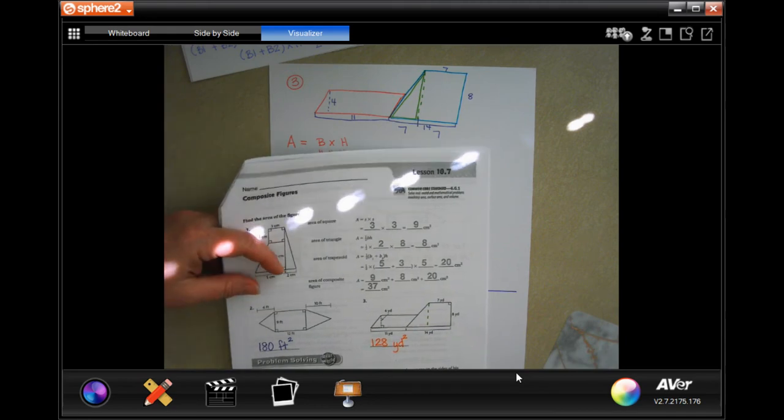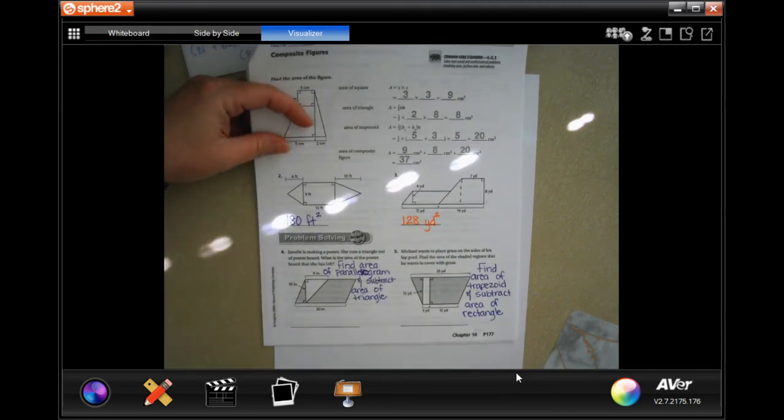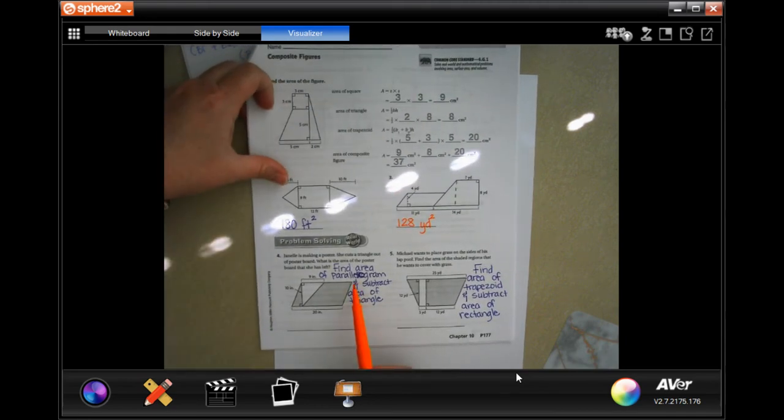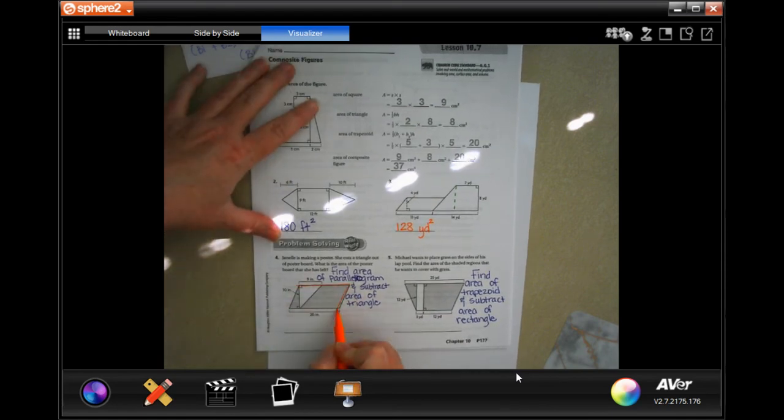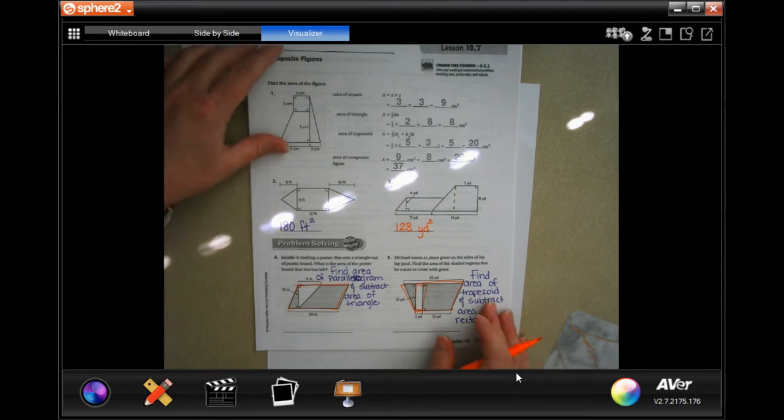Unlike most times, I am going to have you guys go ahead and do the word problems together. I gave you little hints. On the first one, you're going to find the area of the whole parallelogram and then subtract the area of the triangle. On the second one, you're going to find the area of the whole trapezoid and then subtract the area of the little rectangle.